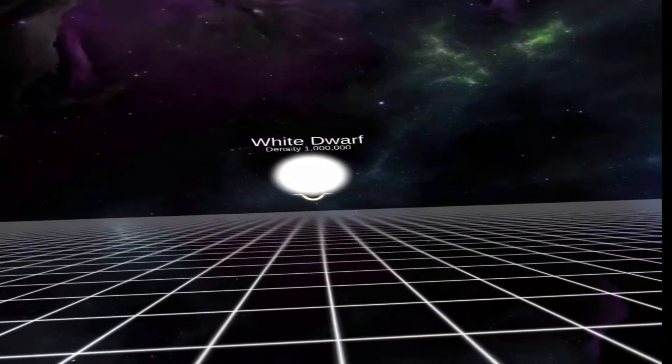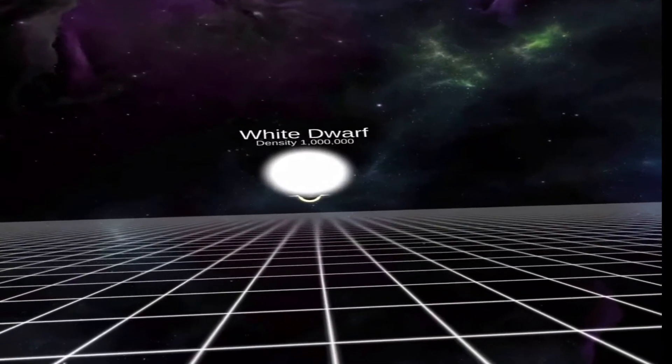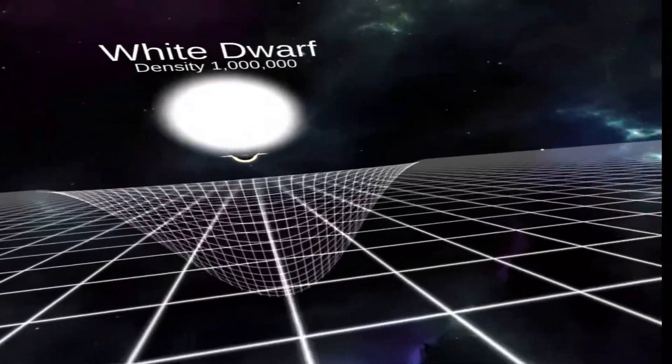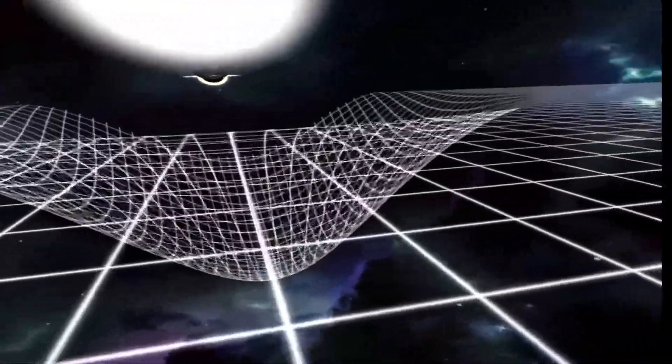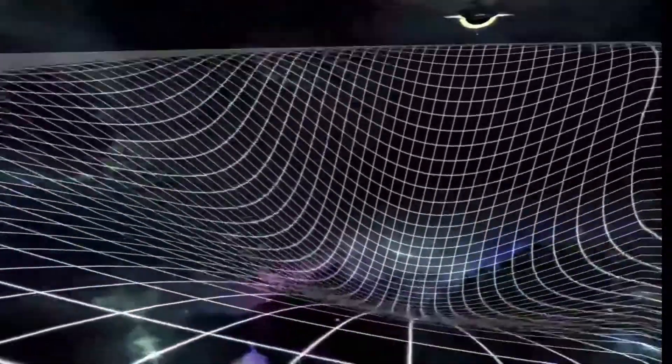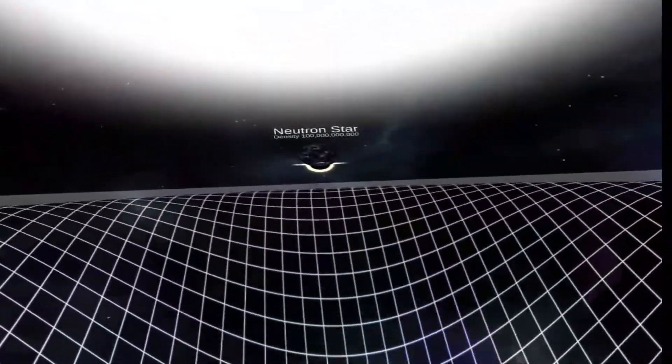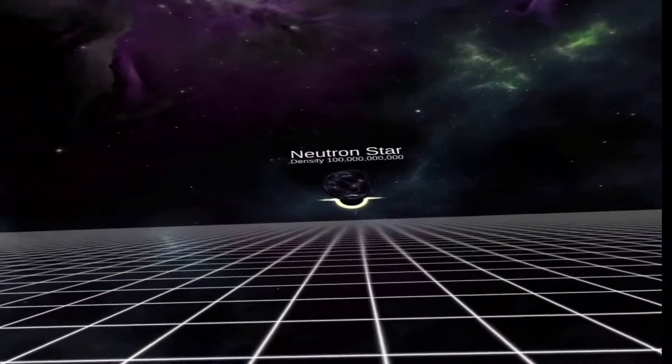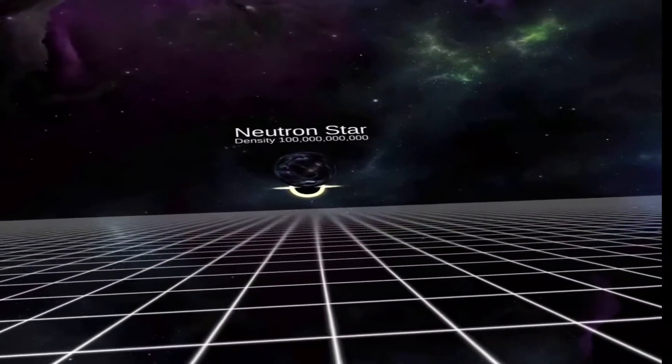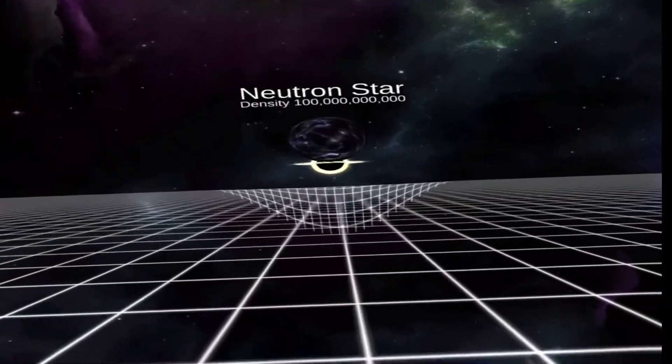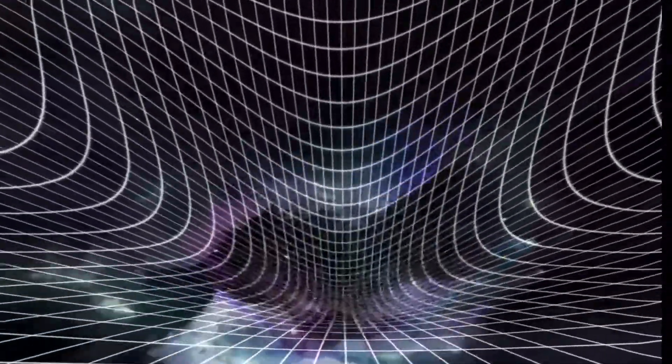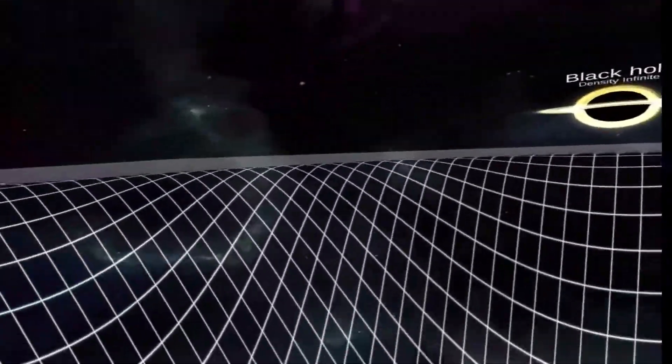It's kind of weird. White dwarf, density of one million. That's quite a lot of distortion if I'm honest.